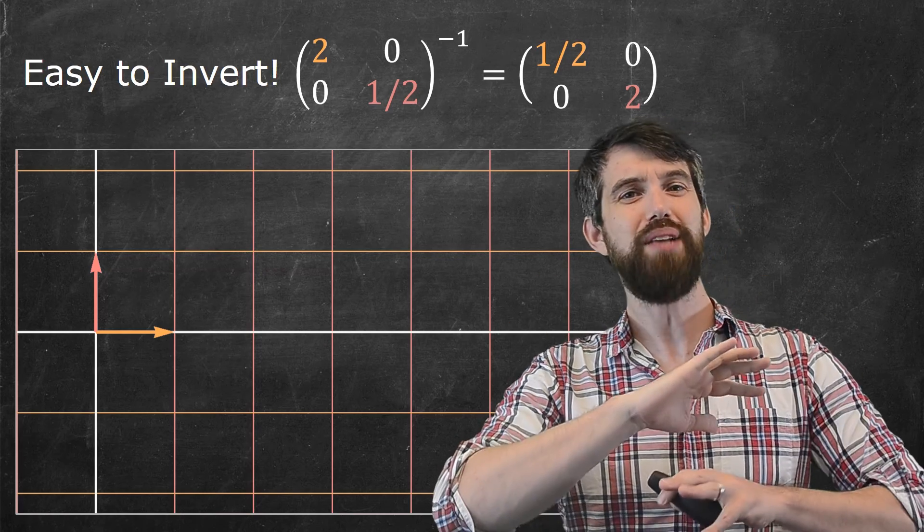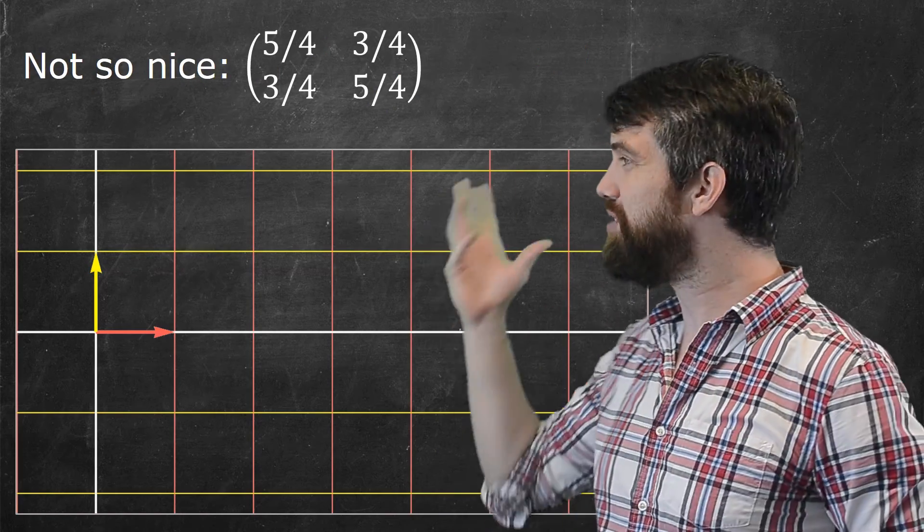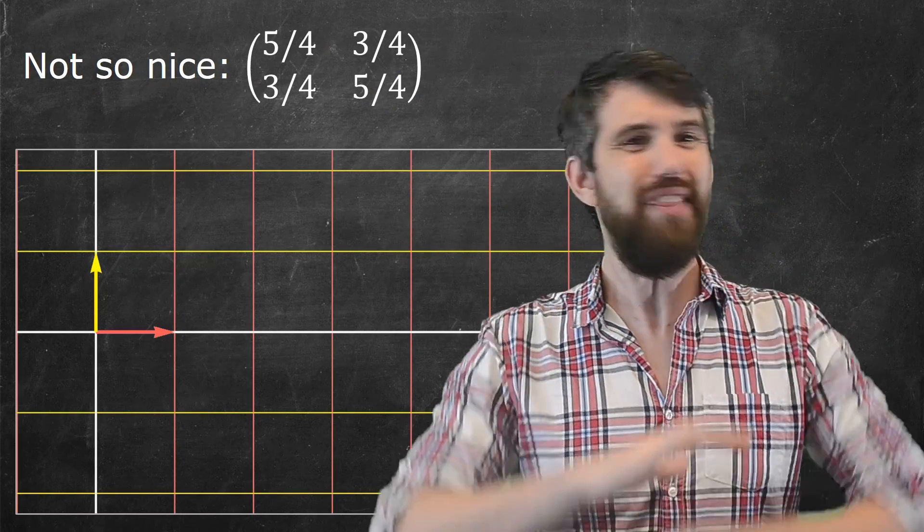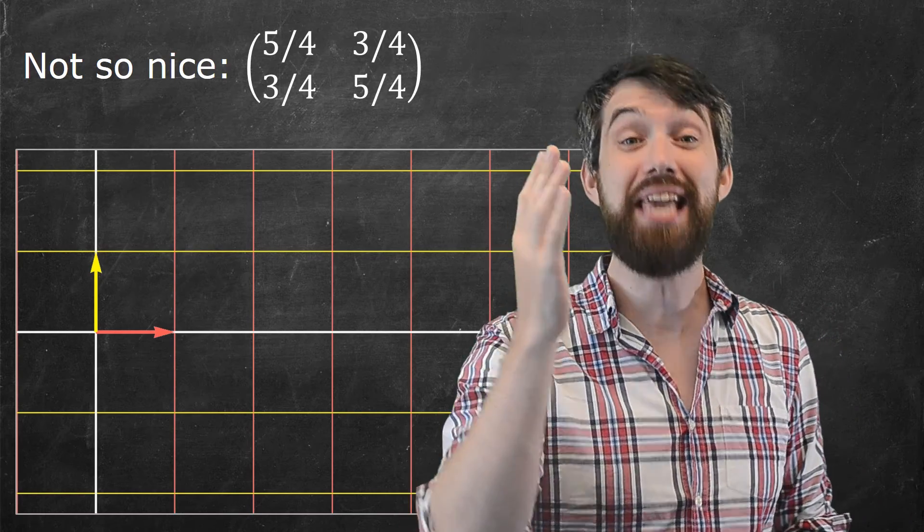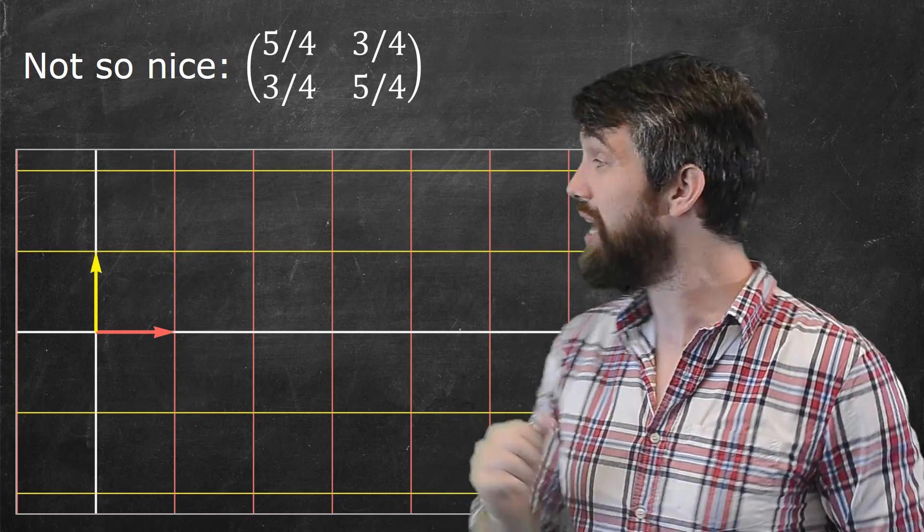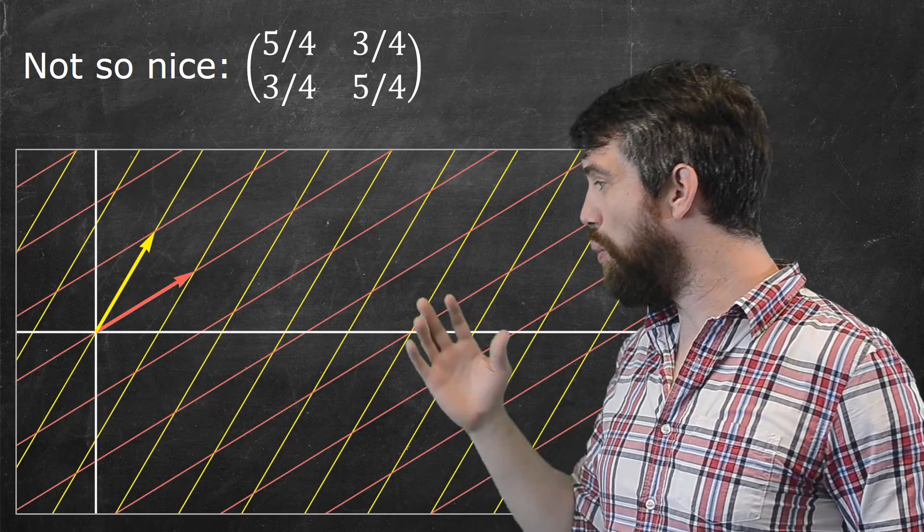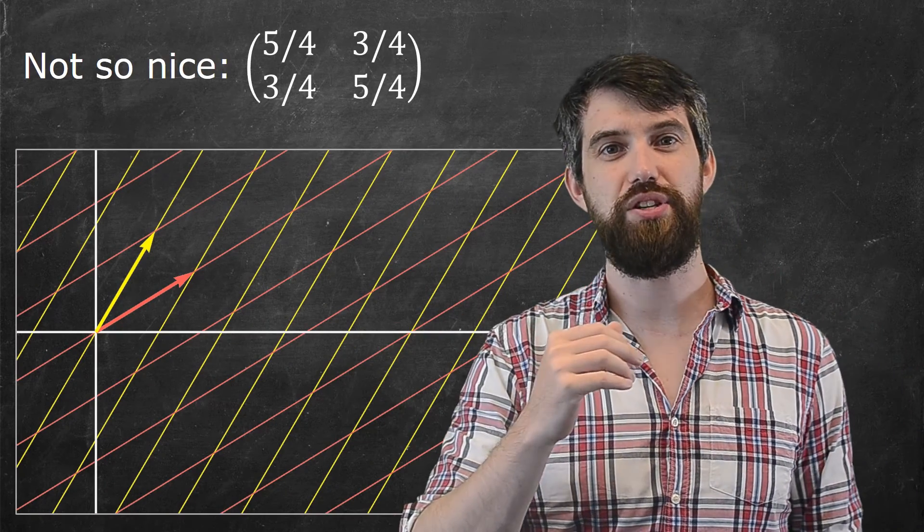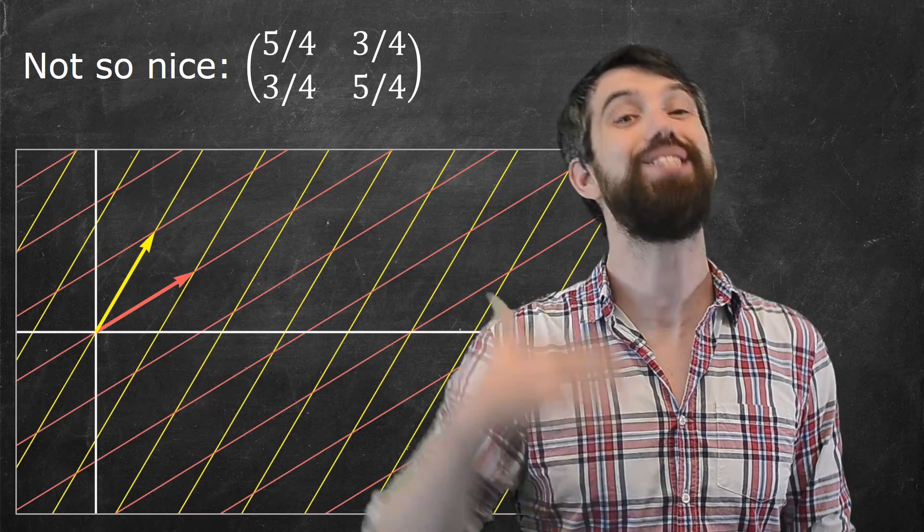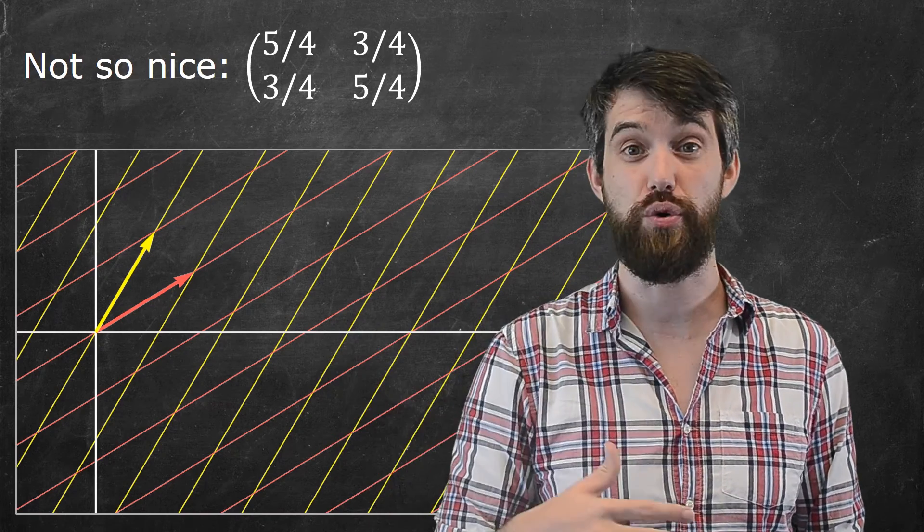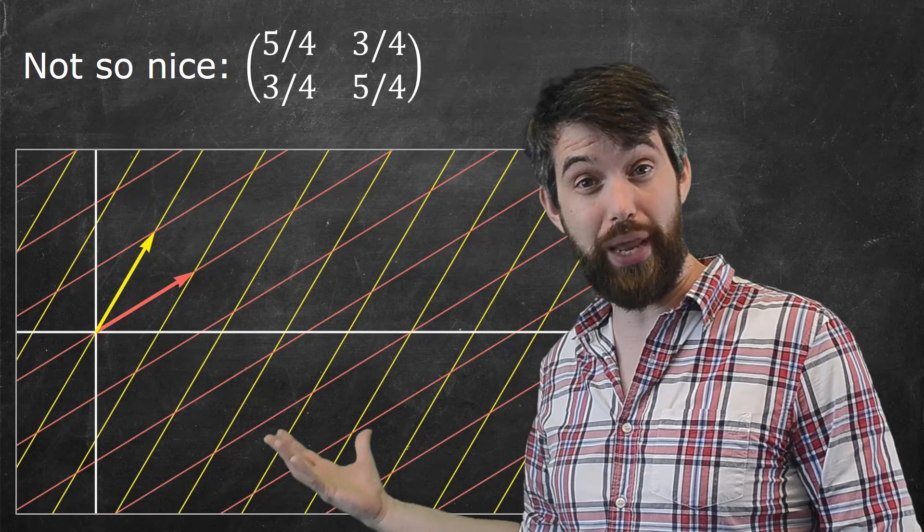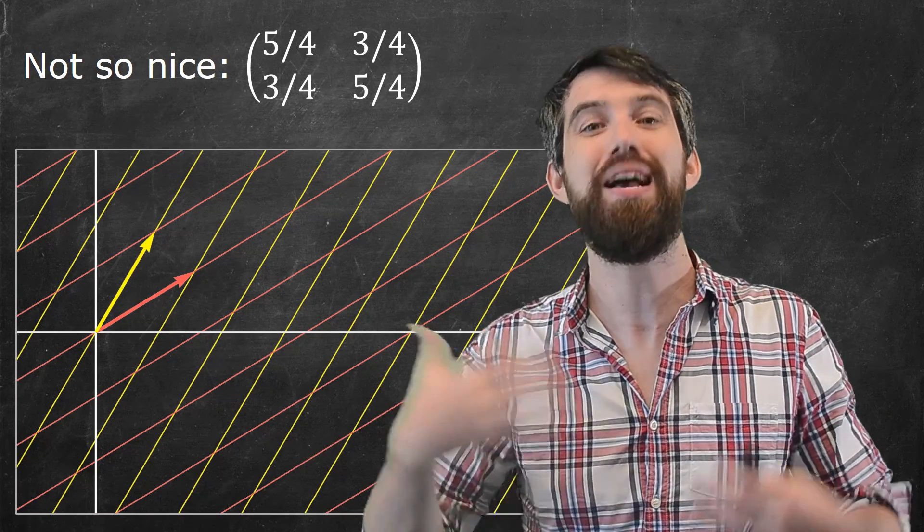But, what about a matrix that's not quite as nice? How about this one here? Now, it's not that I can't visualize this. Indeed, I can visualize this particular matrix. It's going to look a little bit like this. That is, the 1, 0, the first basis vector went to 5 quarters, 3 quarters, and 0, 1, the second basis vector went to 3 quarters, 5 quarters. So, I can indeed visualize it, but I think it's just a little bit messier.